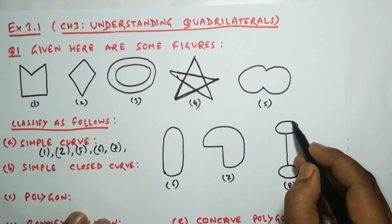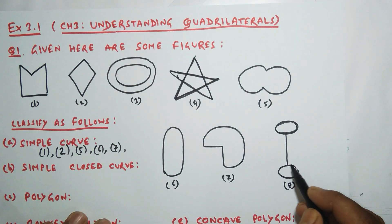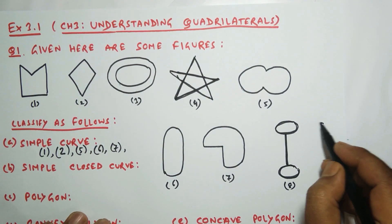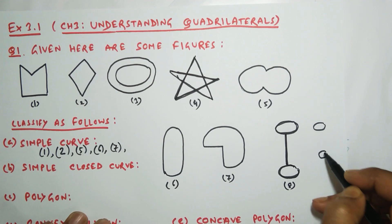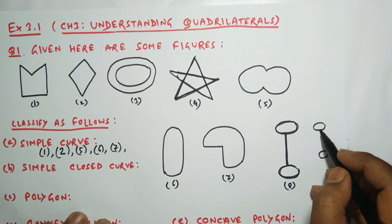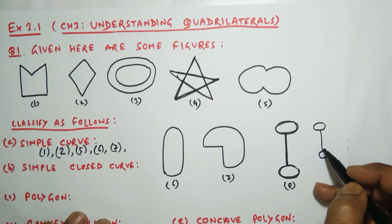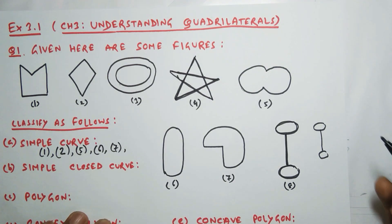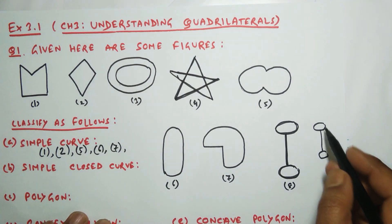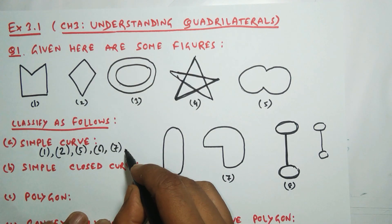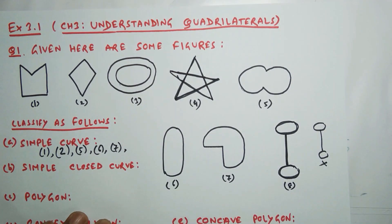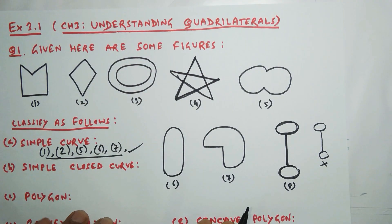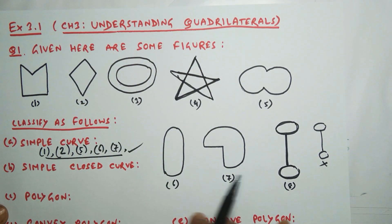Number eight is the same as number three — it has three curves. One curve is here, one curve is here, and one is a line segment here. So there are three curves total, and it cannot be considered as one curve. Since it is a combination of three curves, it cannot be considered a simple curve.